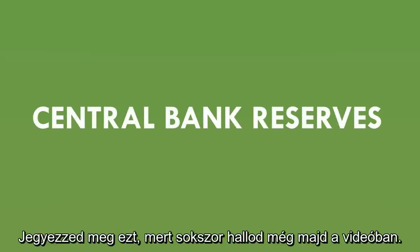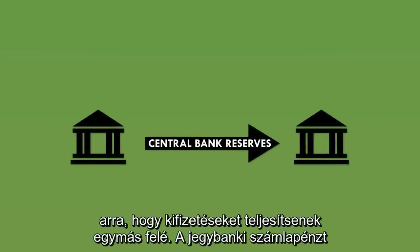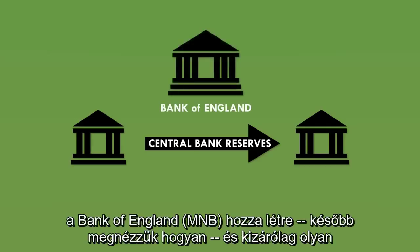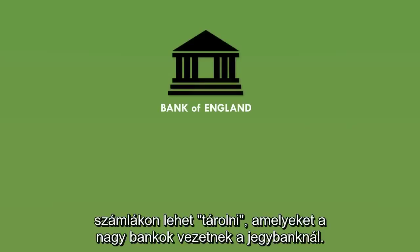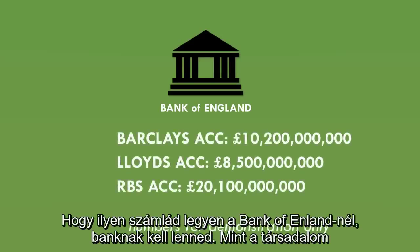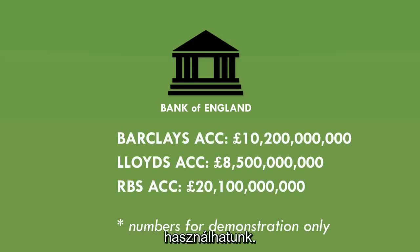Remember that name, because we'll be using it a lot in this video. Central bank reserves are effectively an electronic version of cash, and banks use these electronic central bank reserves to make payments to each other. The central bank reserves are created by the Bank of England, and they can only be stored in accounts that the big banks have with the Bank of England. To get one of these bank accounts at the Bank of England, you have to be a bank — so as members of the public, we can't get our hands on any central bank reserves. We just have to use physical cash.